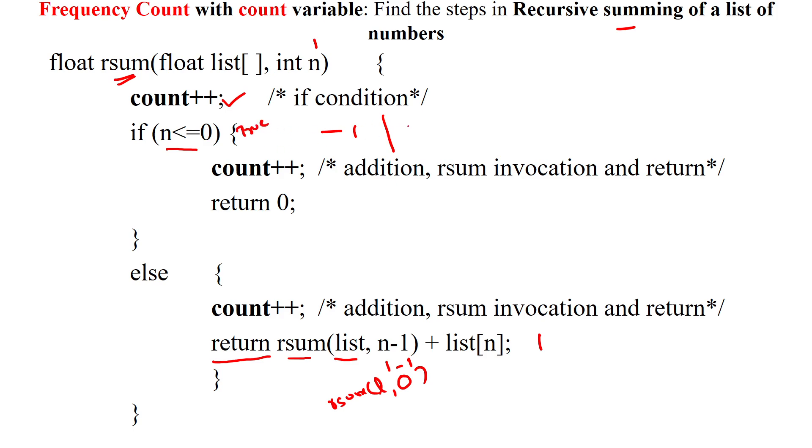So now this is executed for 1 time. Then now it is getting inside the true block. So here the true block is having return 0. So now this is executing for 1 time.